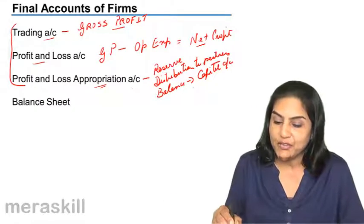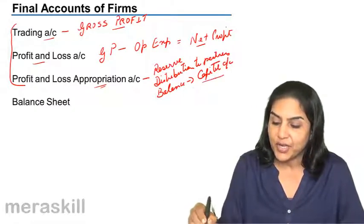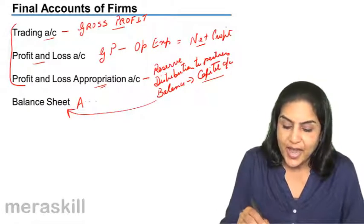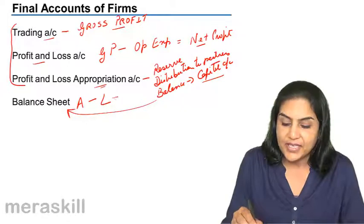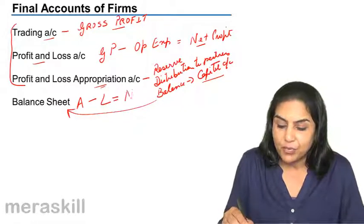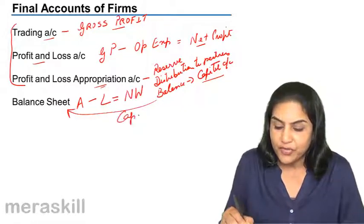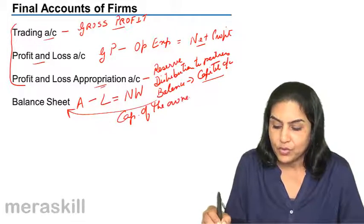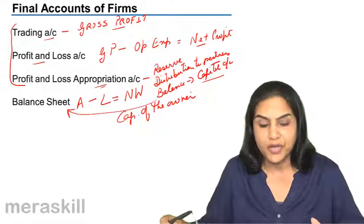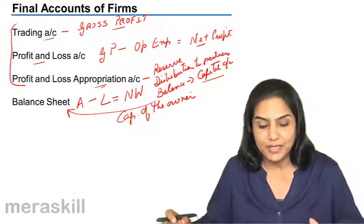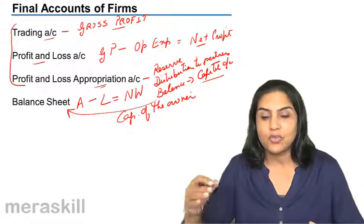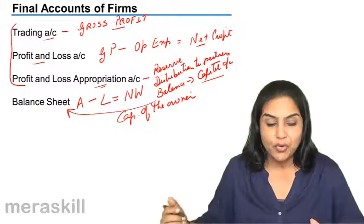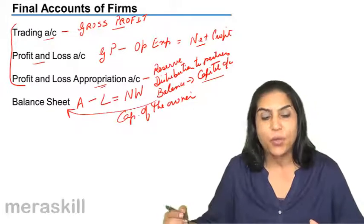The balance which is left is transferred to the capital account, which is found in the balance sheet, which has assets and liabilities. Assets minus liabilities would be equal to the net worth of the business, or the capital of the owners — whether sole proprietor or partners, whoever is running the business. These are the components of the final accounts, and we shall now discuss each of them one by one.